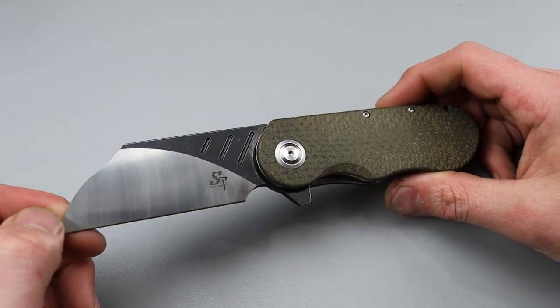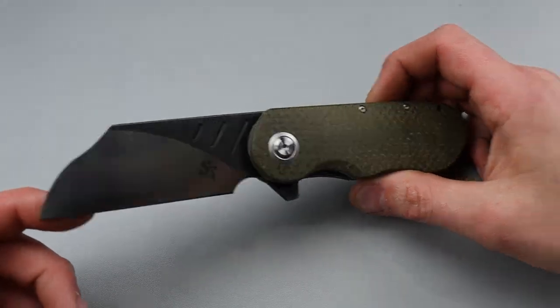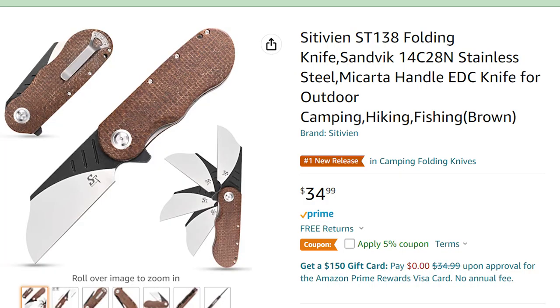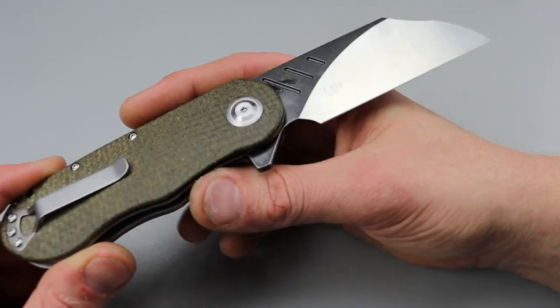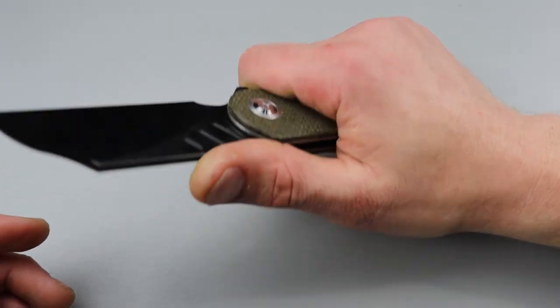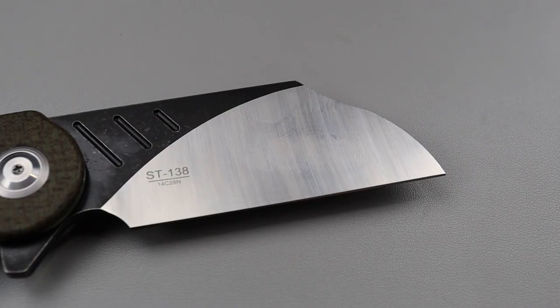Welcome to Bang Neves Knives, I'm Jared and we are checking out a new Sativian model in 14C28N blade steel. I'm very excited to see them using this steel. This is the ST138 by Sativian and it is pretty beefy.